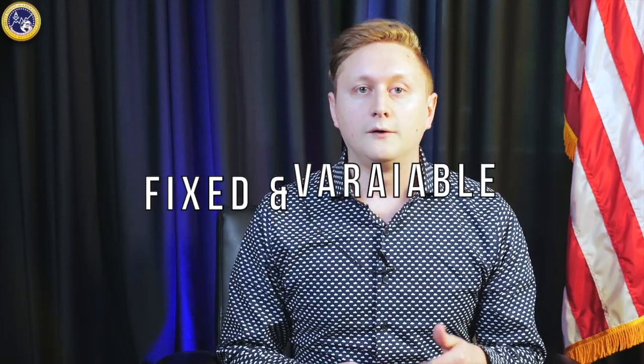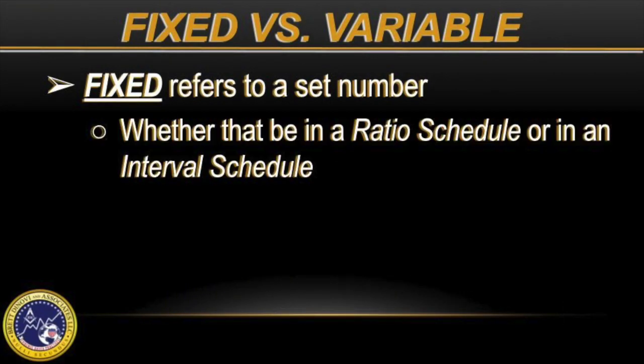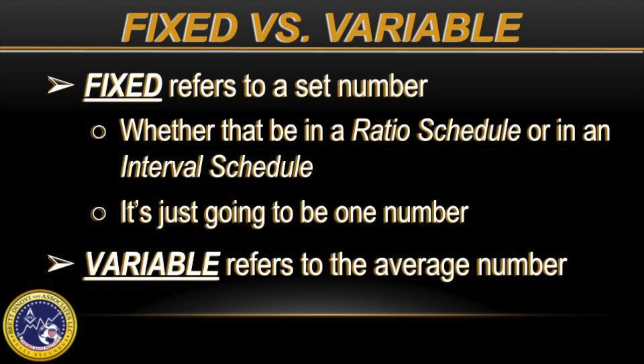Our next two terms are fixed and variable. Fixed refers to a set number, whether that be in a ratio schedule or in an interval schedule — it's just going to be one number. When we're looking at variable, we're actually looking at the average number.